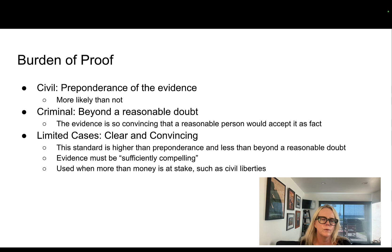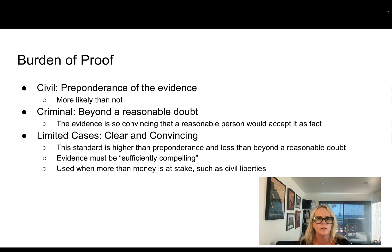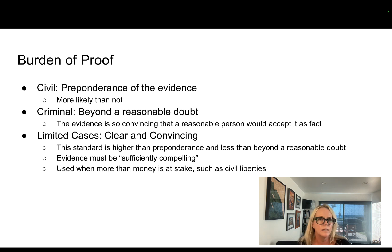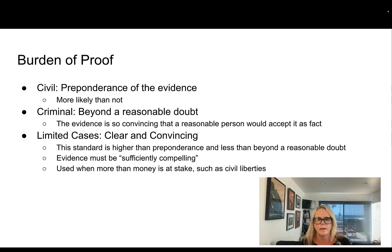The burden of proof is about to what extent you need to prove your case. In a civil case, you have to prove your case by a preponderance of the evidence — that just means it's more likely than not that it happened, that you are 51% more believable than the other party. In a criminal case, it's beyond a reasonable doubt, which means the evidence is so convincing that a reasonable person would accept it as fact. I think of it as needing to prove your case 99.9% in a criminal case and 51% in a civil case.